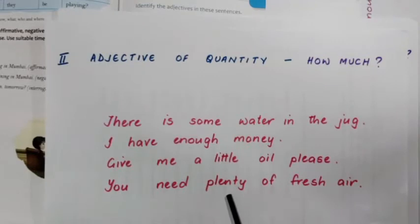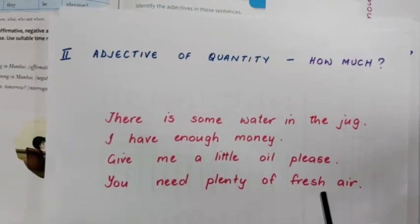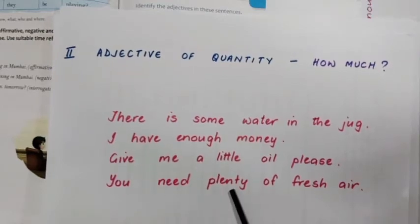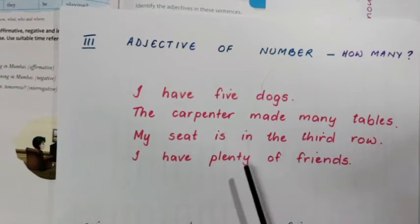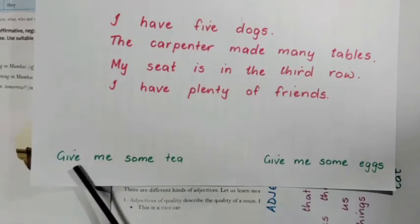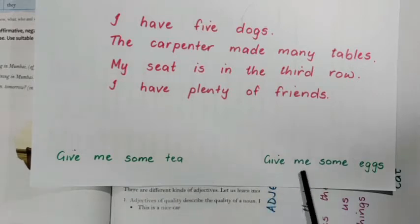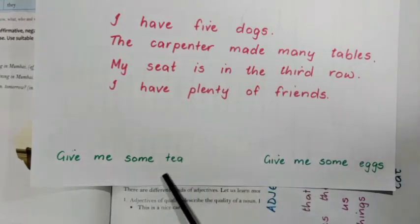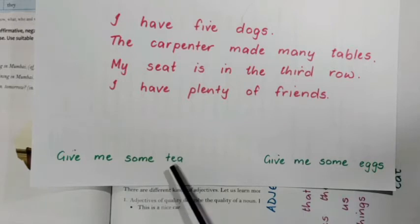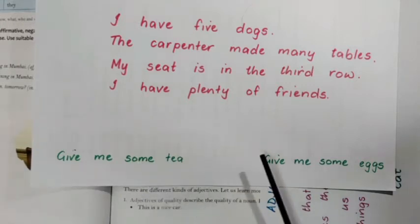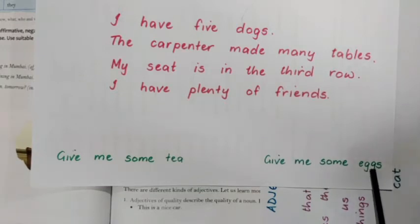When plenty is used with an uncountable noun like 'fresh air,' it is an adjective of quantity. When used with a countable noun, it is an adjective of number. Another example: 'Give me some tea' — tea is uncountable, so some is an adjective of quantity. 'Give me some eggs' — eggs are countable, so some is an adjective of number. Uncountable noun: adjective of quantity. Countable noun: adjective of number.